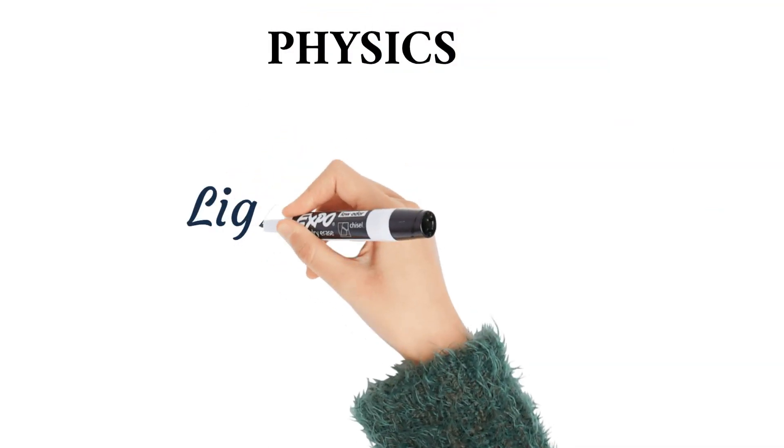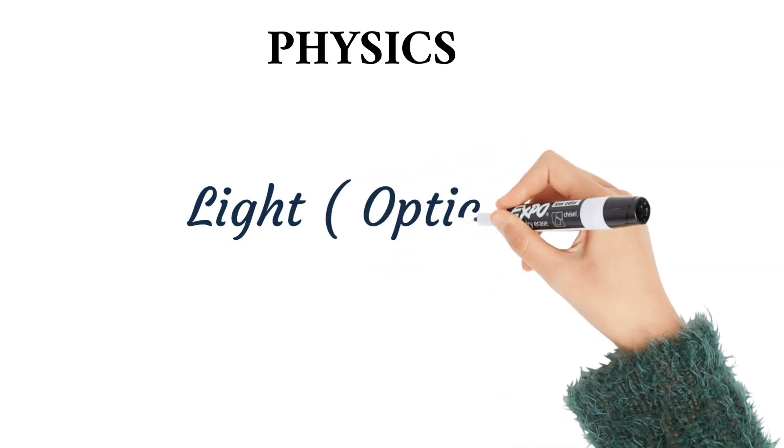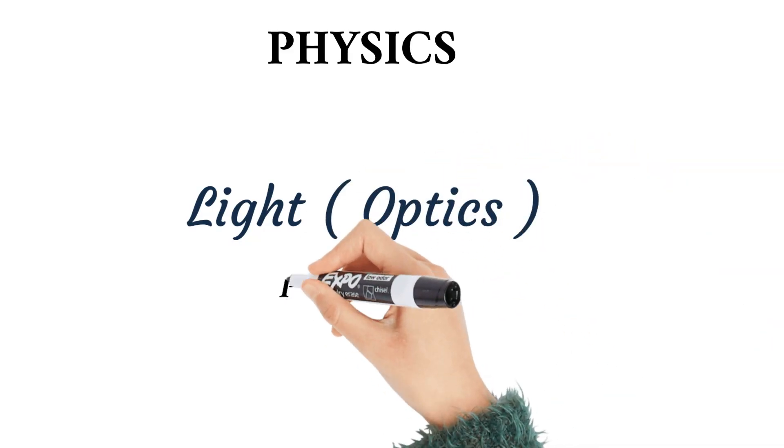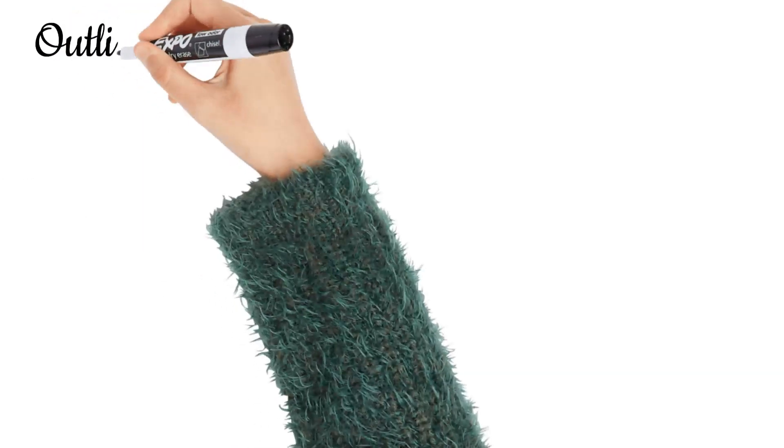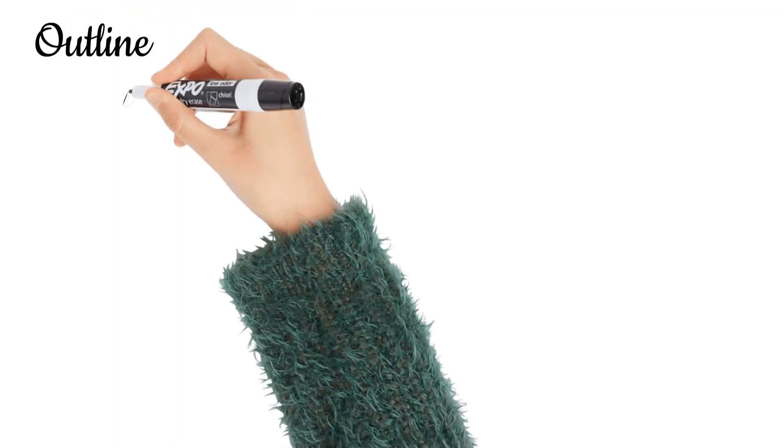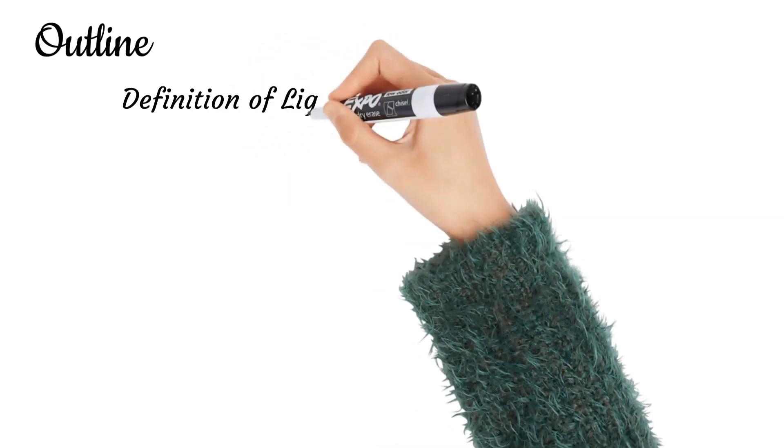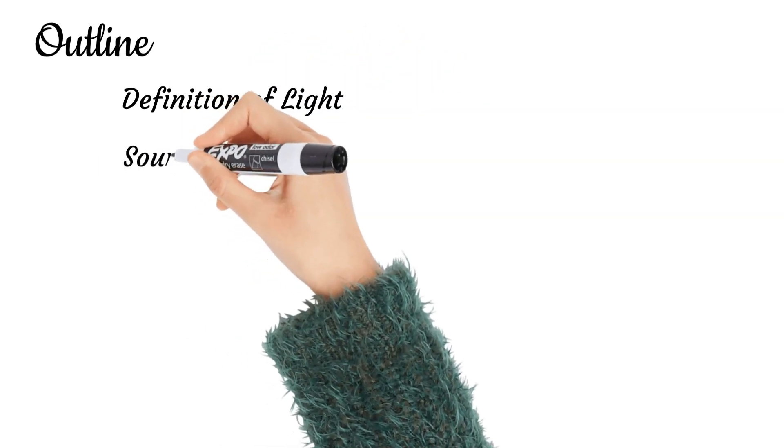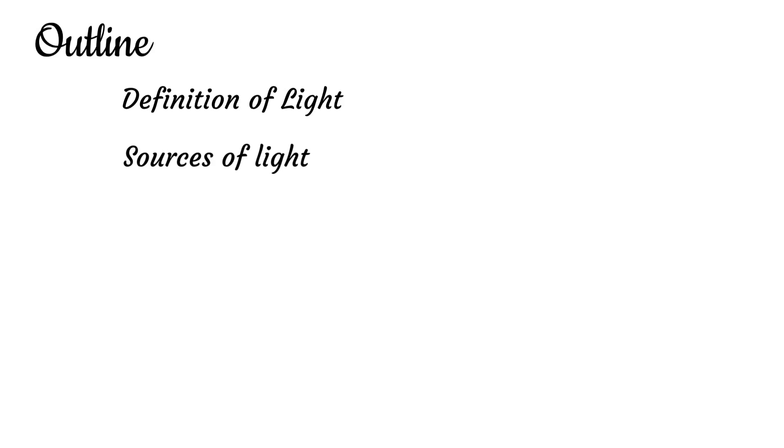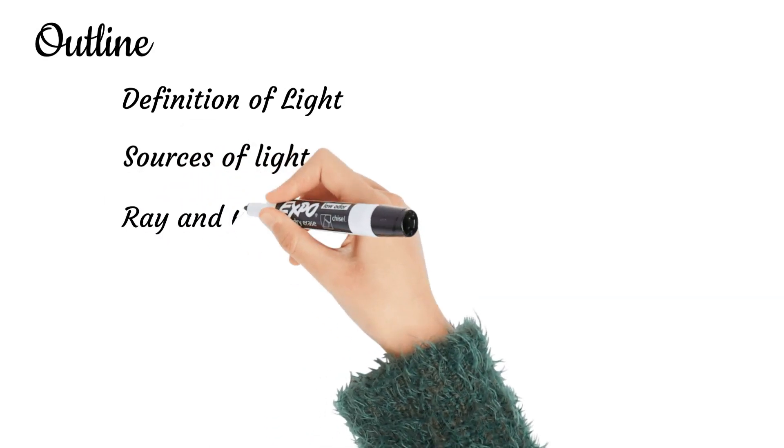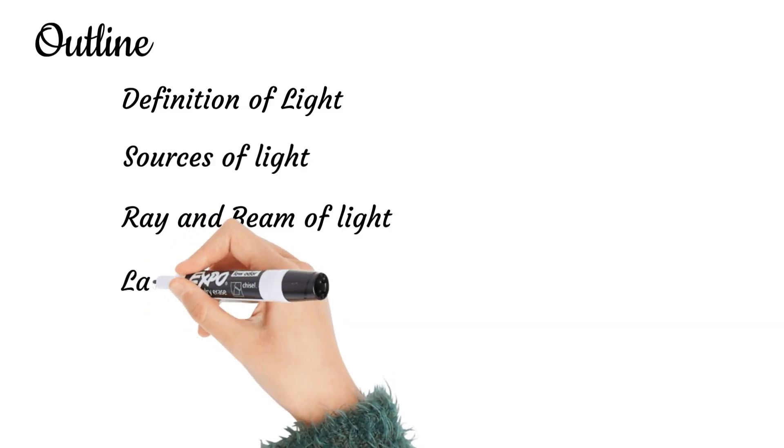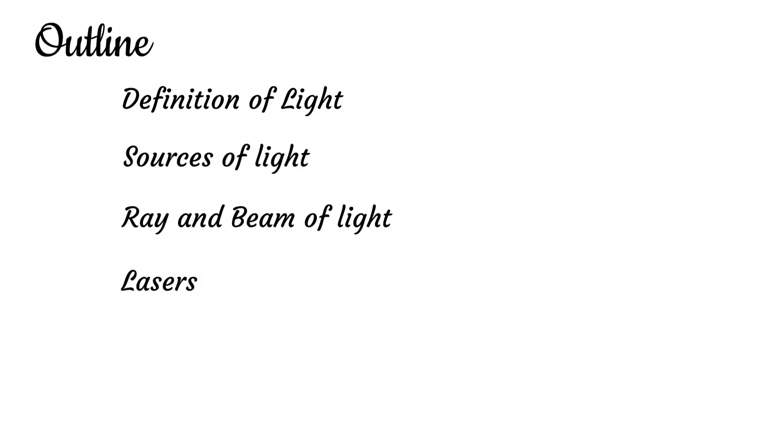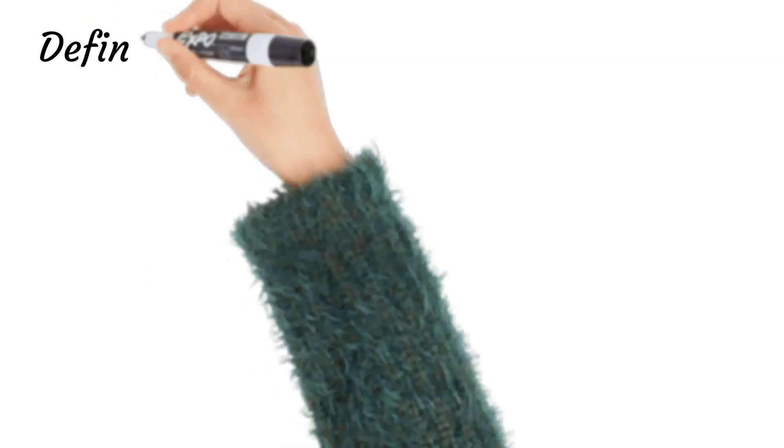In physics today we are looking at light or optics. This is part one of the class. We look at the following outline: first, the definition and introduction of light; next, the sources of light; then rays and beams of light; and finally, lasers. Let's begin.